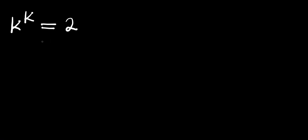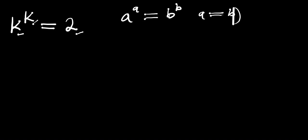In this video we have the exponential equation k to the power of k, and this equals 2. Remember, if you have a to the power of a and this equals b to the power of b, then we can say that a equals b. So we are looking for a number that, if we raise it to the power of itself, we are going to have 2.